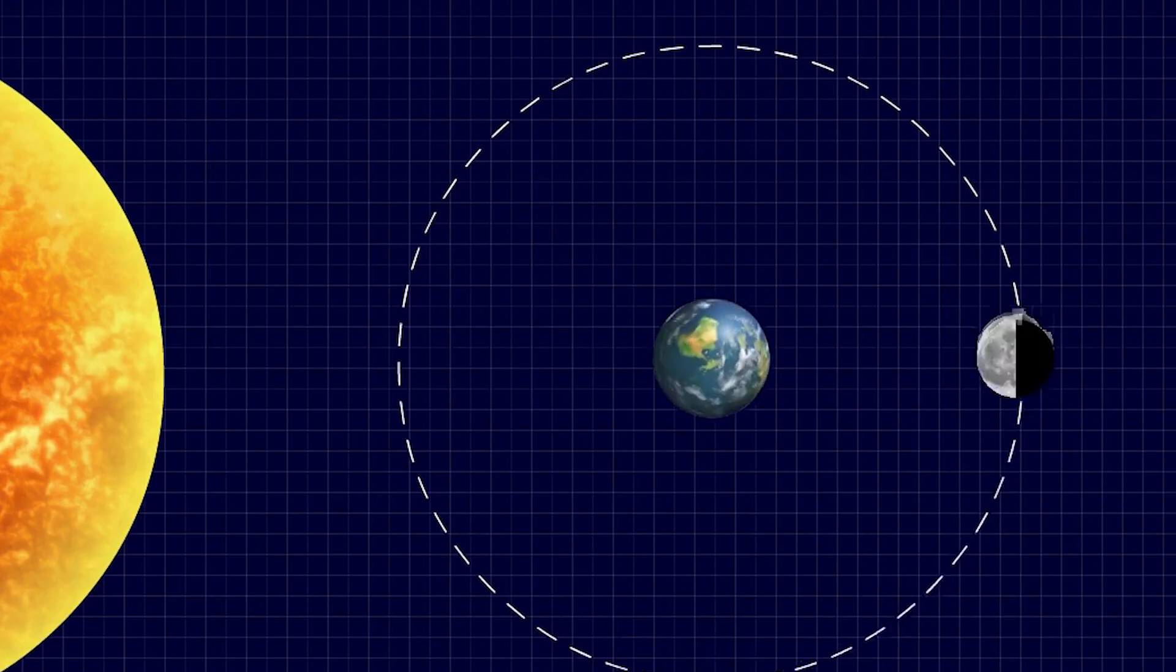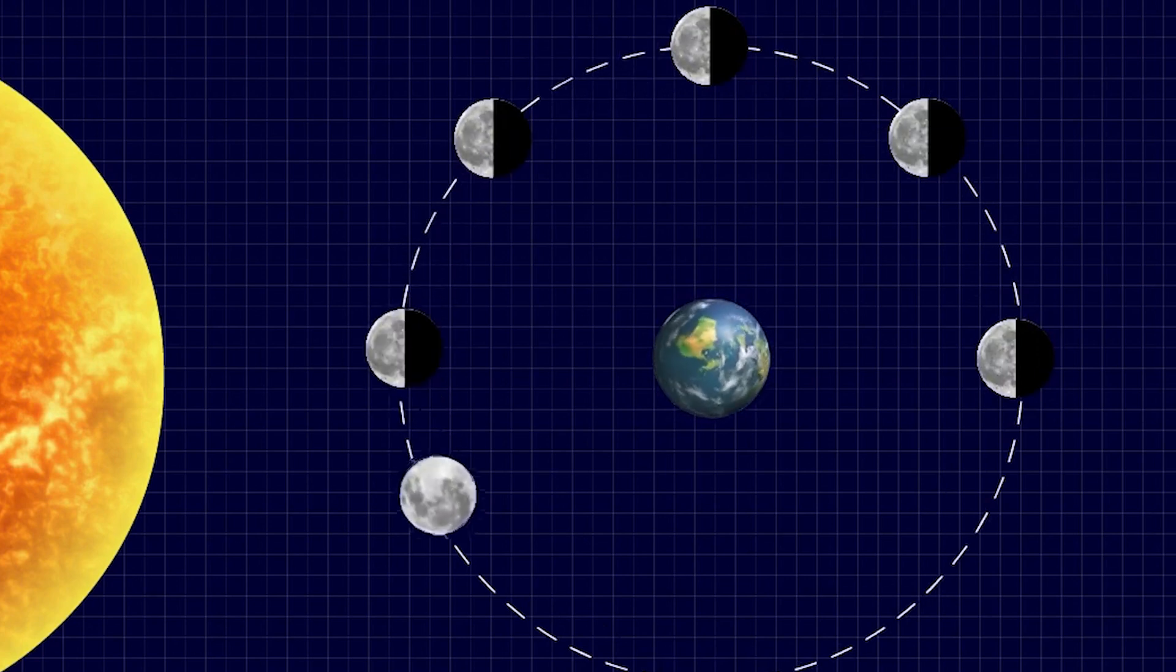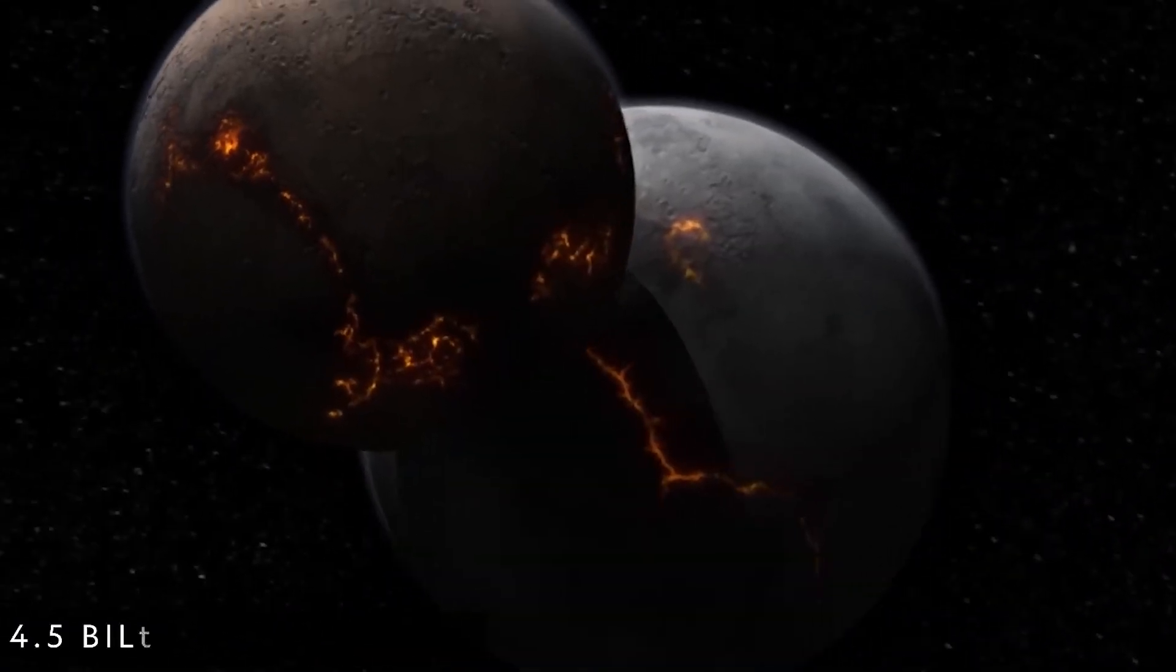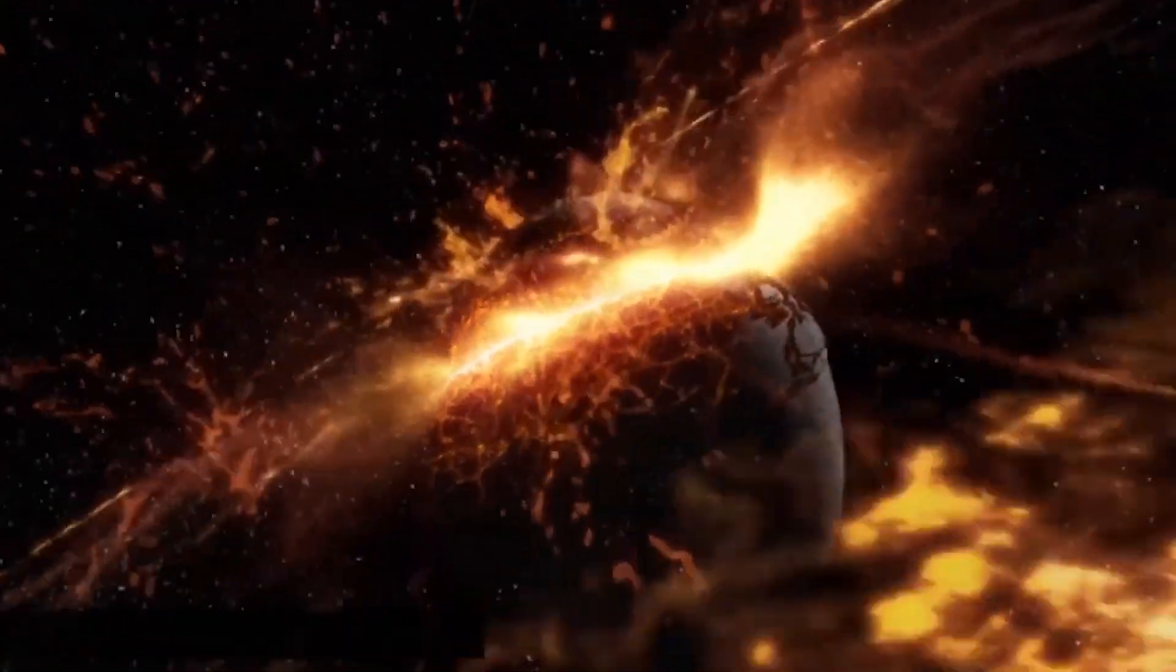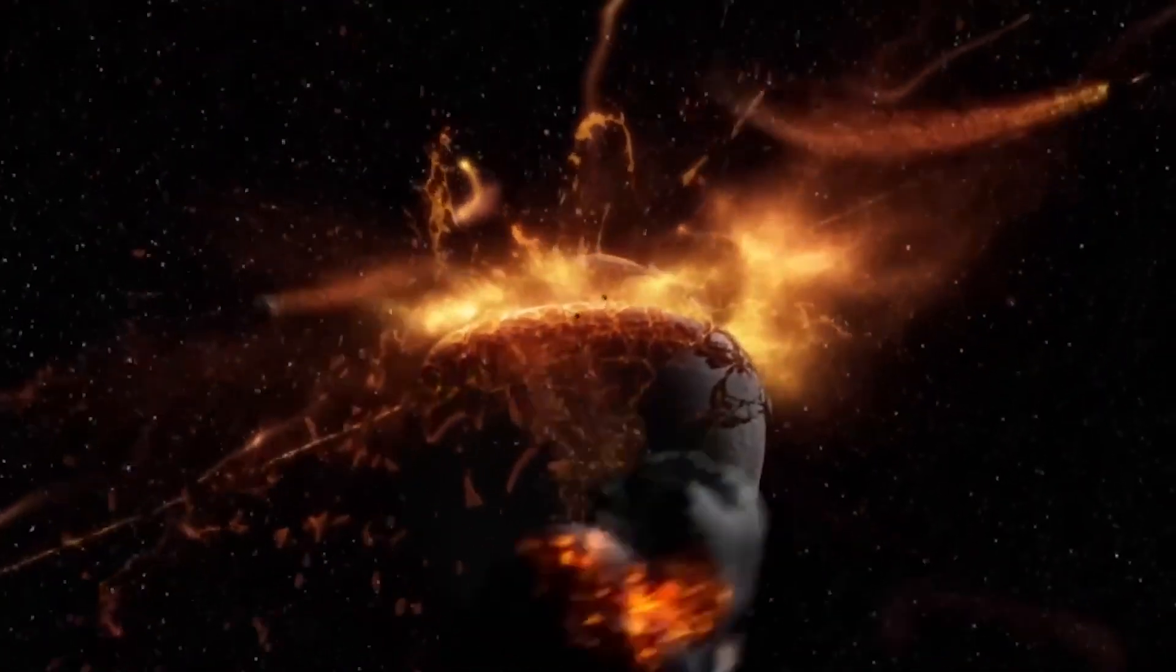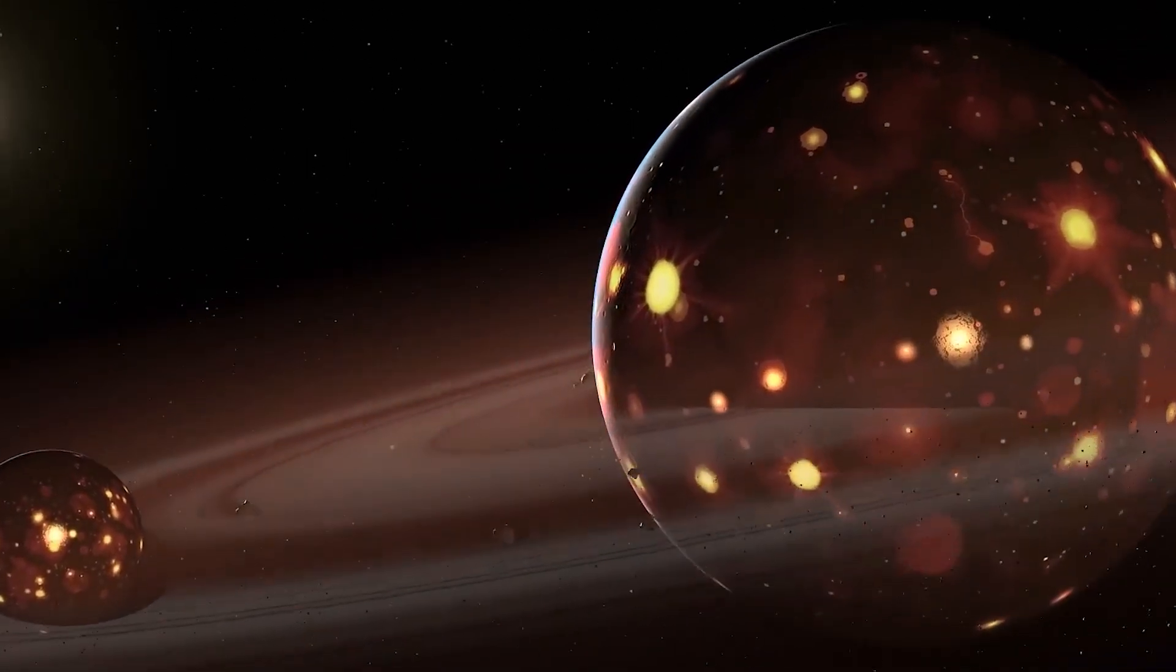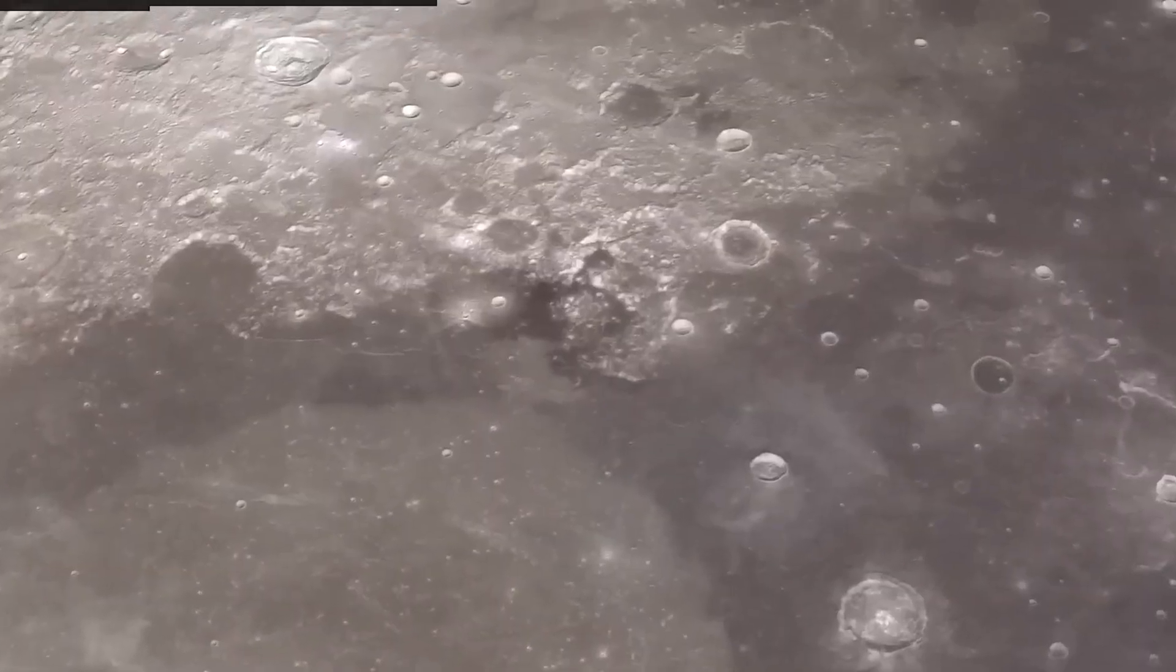In about 50 billion years, the Moon's outward spiral would theoretically end with Earth and the Moon becoming tidally locked, always showing the same faces to each other as they orbit around a common center of mass. The formation of the Moon itself is a fascinating story that ties into its current retreat. The prevailing theory, known as the Giant Impact Hypothesis, suggests that a Mars-sized object collided with the early Earth about 4.5 billion years ago. The debris from this massive impact coalesced to form the Moon. This violent birth set the stage for the gravitational interactions we observe today.